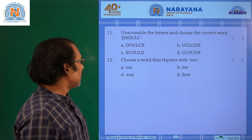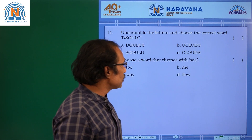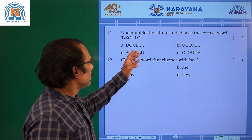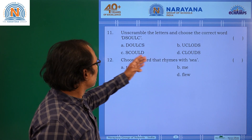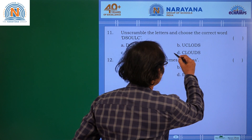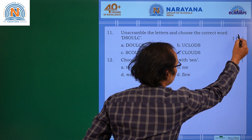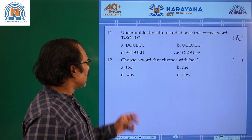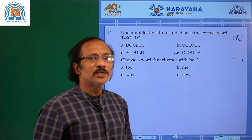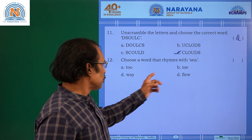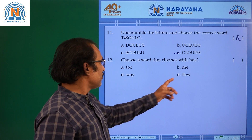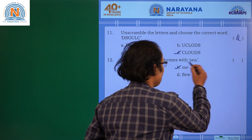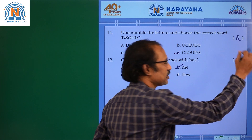Question number 11: Unscramble the letters and choose the correct word. D, S, O, U, L, C — it is clouds. The answer is D. Question number 12: Choose a word that rhymes with sea. Options: to, me, way, flew. It is me. The answer is B.